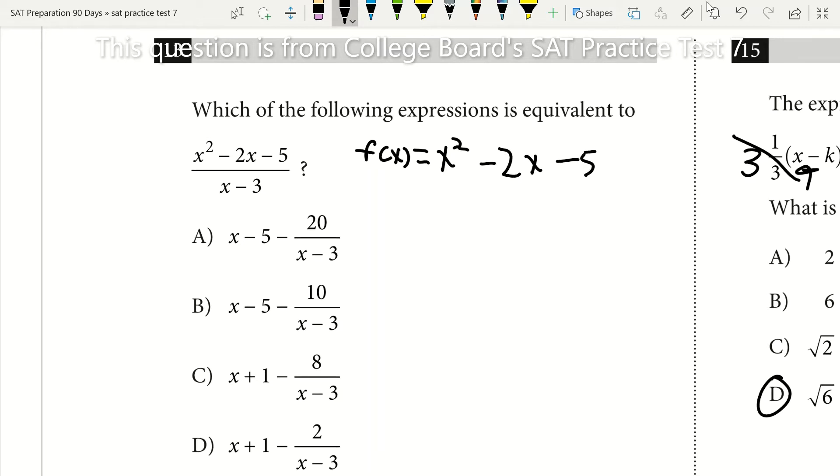Well then what we can do is if we call our denominator x minus a, we know then that f of whatever a is will give us our remainder over x minus 3. Okay so whatever f of a equals that's going to be our remainder. Now keep in mind our remainder has to be divided by that x minus 3 since that's what's in our denominator.